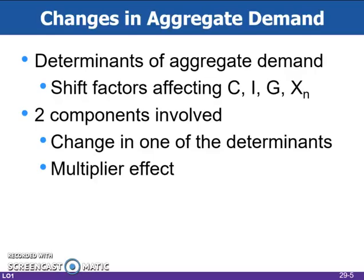Changes in investment spending can be caused by changes in several factors as well: interest rates, expected returns, expected future business conditions, technology, degree of excess capacity, and business taxes. These were also covered in Chapter 27. The last two determinants are changes in government spending and changes in net export spending unrelated to price level, which may be caused by changes in factors such as national incomes abroad and exchange rates. These will be discussed in more depth in later chapters.